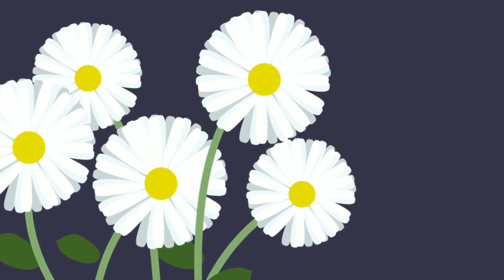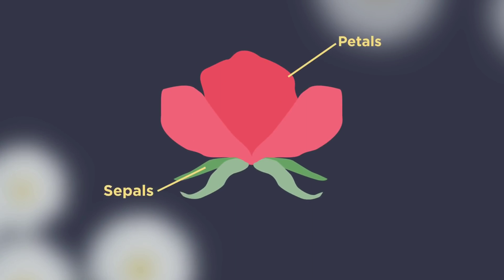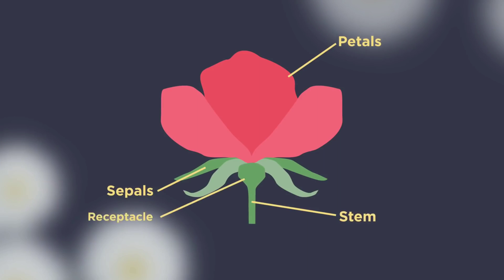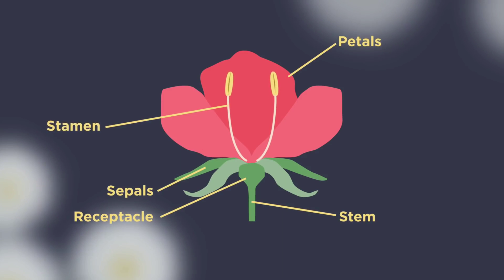In plants, sexual reproduction is carried out in the flowers. The flowers contain the sexual organs. Let's start by labeling the different parts of a flower. The petals and the sepals help protect the flower bud and can be brightly colored or scented to attract pollinators. The stem and the receptacle are the parts that connect the flower to the rest of the plant.